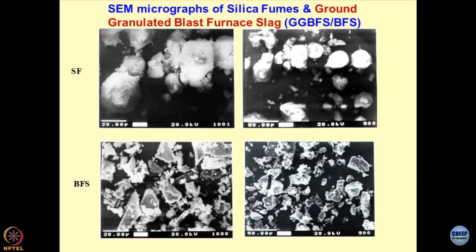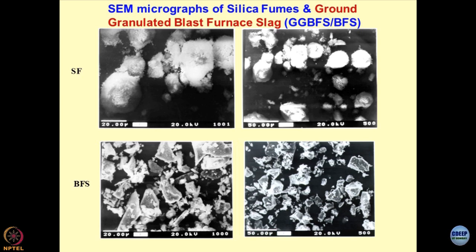This view shows how most geomaterials which are man-made look like. We have been talking about blast furnace slag, silica fumes, and so on in the previous lecture. One obvious question is: if you want to understand how to use a material for a specific project, you have to look into its microscopic structure.